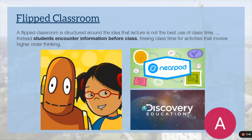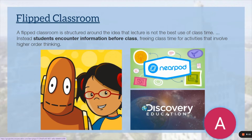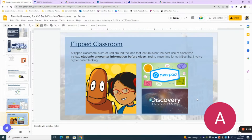We'll take a deeper look at what station rotations can look like in a K-5 classroom. We have the flipped classroom model, which you may be familiar with. The flipped classroom model is centered on the idea that lecturing is not the best way to provide instruction. Instead, students get to encounter information before they receive direct instruction. Some resources I use personally include BrainPop Junior, Nearpod, and Discovery Ed. Let's take a look at a resource provided by Discovery Ed.